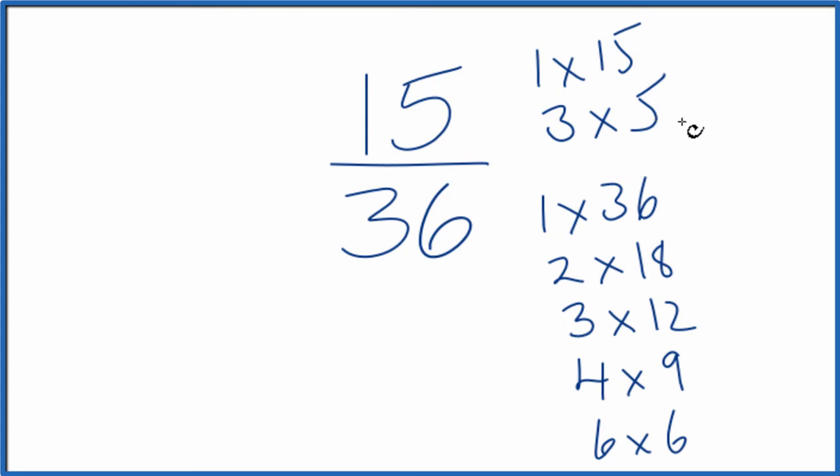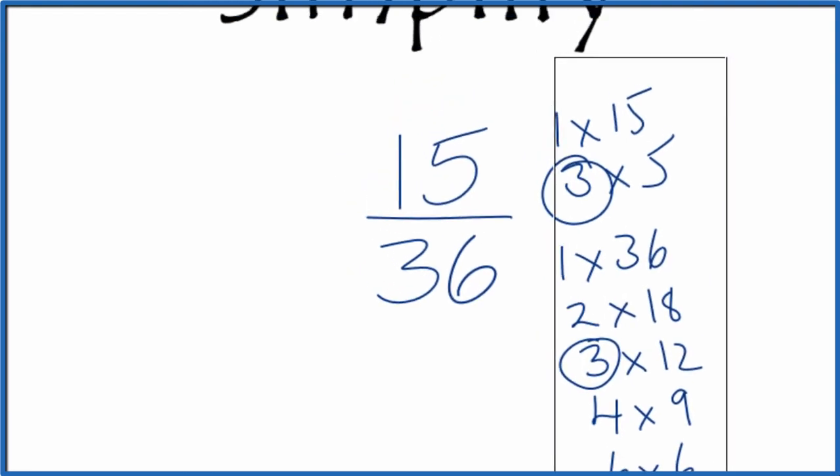When we look at this, the greatest common multiple is going to be 3. So 3 goes into 15 and 36 evenly. Let's move these here over to the other side.